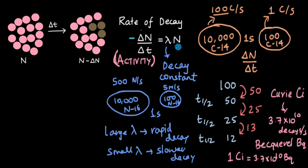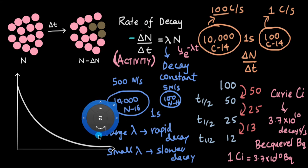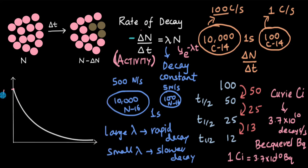We can represent activity in the form of a graph. Since radioactive atoms decay exponentially — N varies as e to the power of minus lambda t — activity also varies exponentially, since activity equals lambda times N. The same exponential decay graph applies: initial activity A₀ reduces to A₀/2 in one half-life, and to A₀/4 in one more half-life.